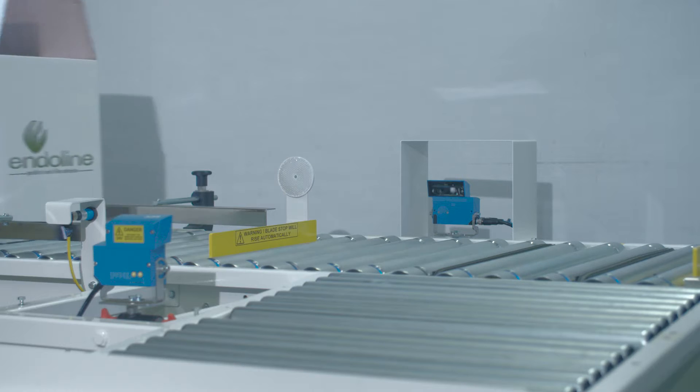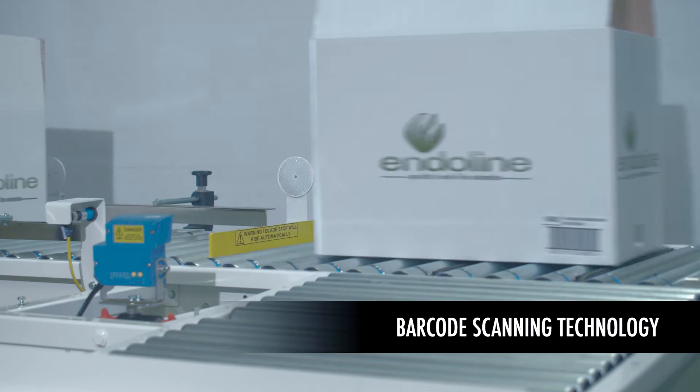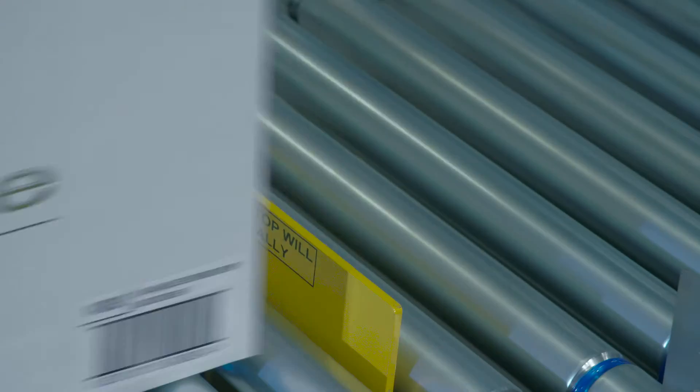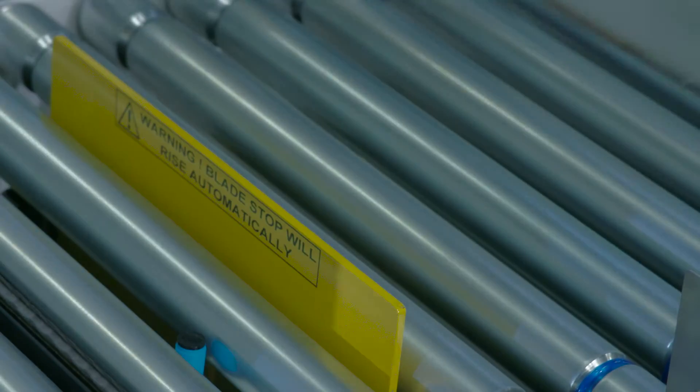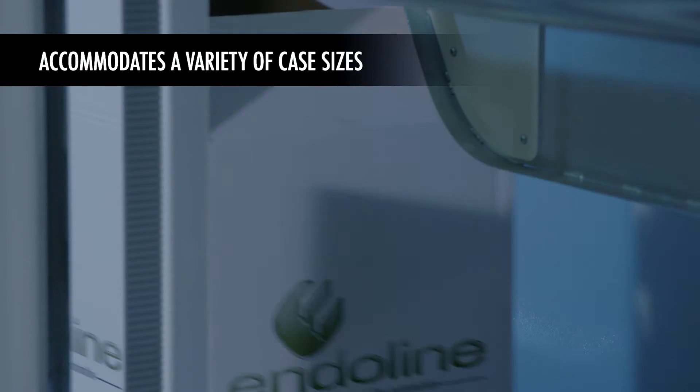The 744 case sealer has barcode scanning technology. This enables the machine to read data on the case before it enters the sealing section, allowing the machine to adjust its sealing settings to accommodate a variety of case sizes.